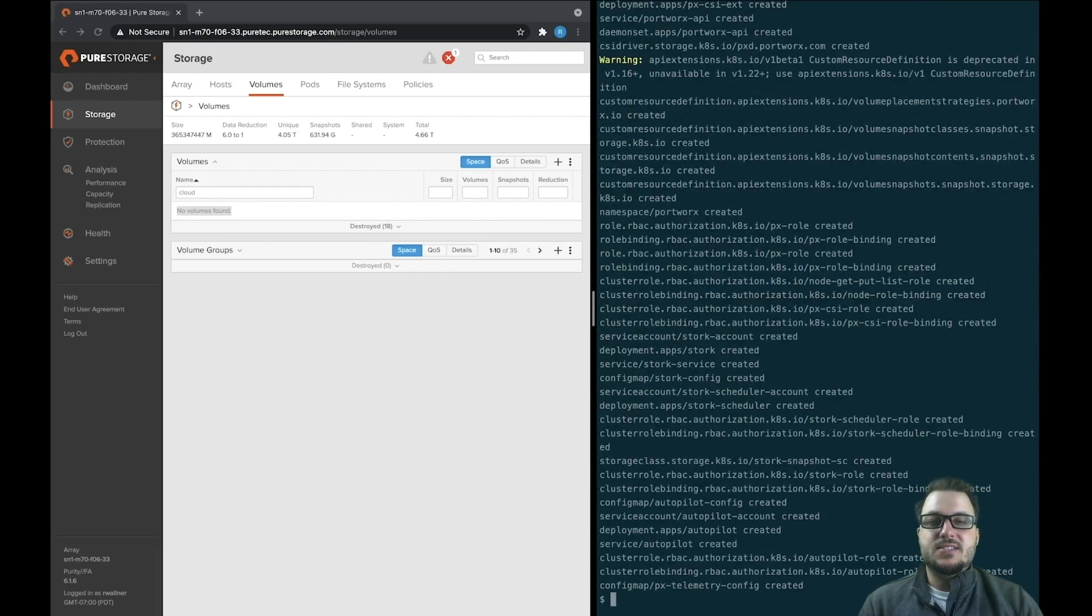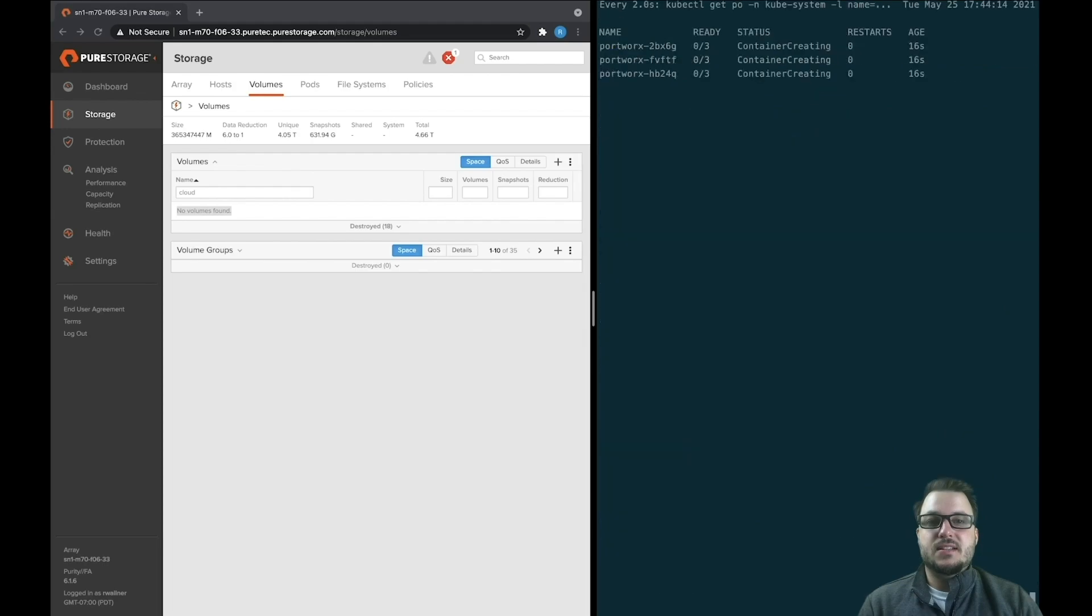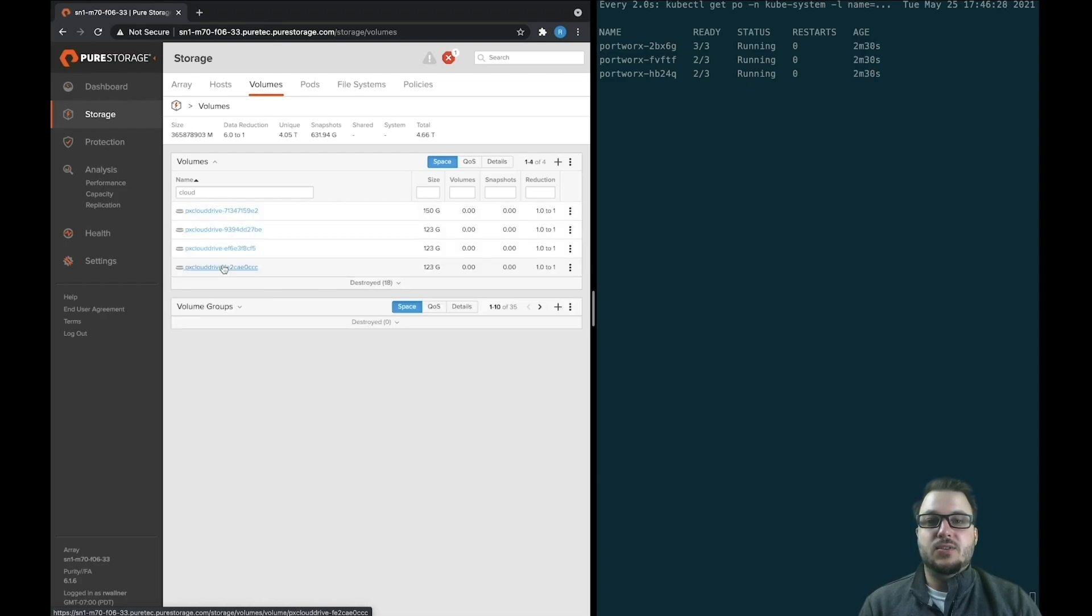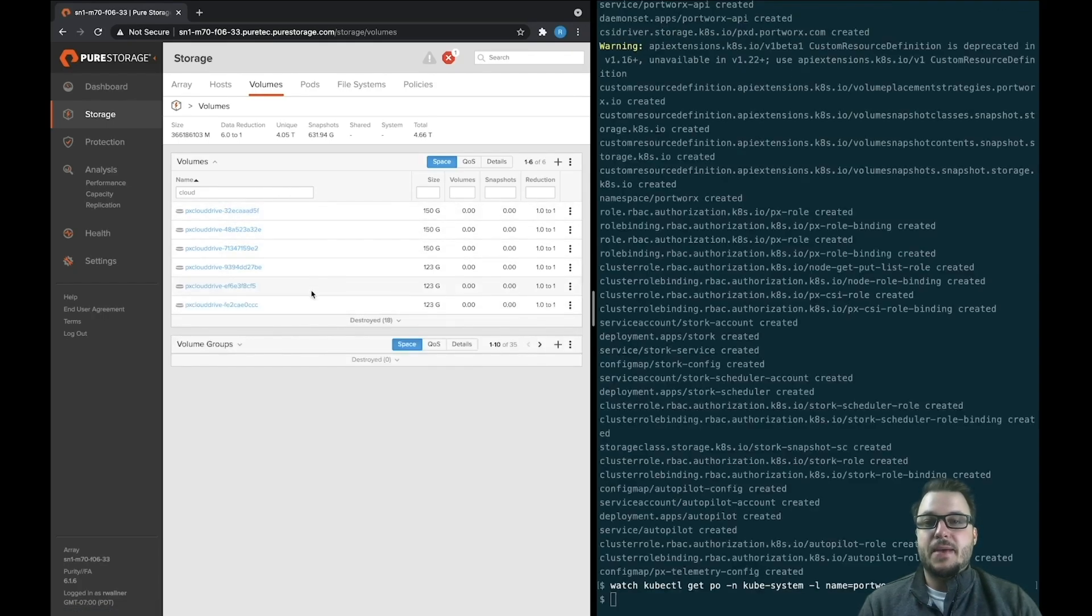Next, we go ahead and install Portworx as you normally would, but with the pure provisioner secret in the kubesystem namespace. Portworx finds this secret and tells itself that it's using a flash array environment. This is where the magic happens. Portworx goes ahead and talks to the flash array, creates the needed hosts and connectivity between the worker nodes and the flash array, goes ahead and creates those PX Cloud Drive LUNs and attaches them into the worker nodes. This will then create a globally accessible storage pool for your containers. Here we can see the PX Cloud Drive automatically getting created for both metadata and data aspects of Portworx.